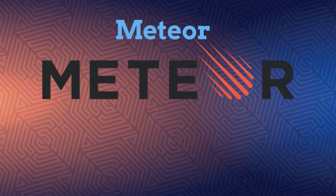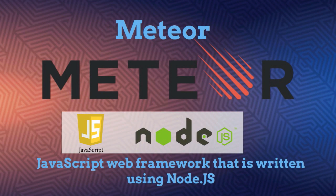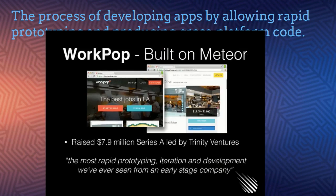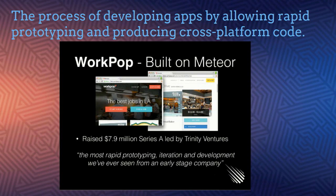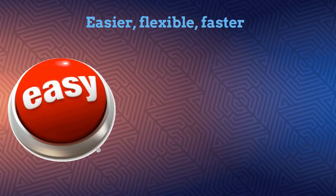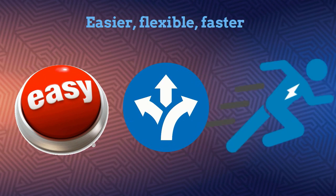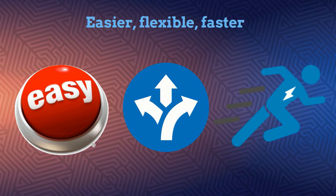Number seven: Meteor. Meteor is an amazing open source JavaScript web framework that is written using Node.js. It simplifies the process of developing apps by allowing rapid prototyping and producing cross-platform code. As a full JavaScript framework, Meteor is made up of a collection of libraries and packages that are bound together, making it easier, flexible, faster, and requiring less code. This also results in the code being less buggy and of a higher quality.